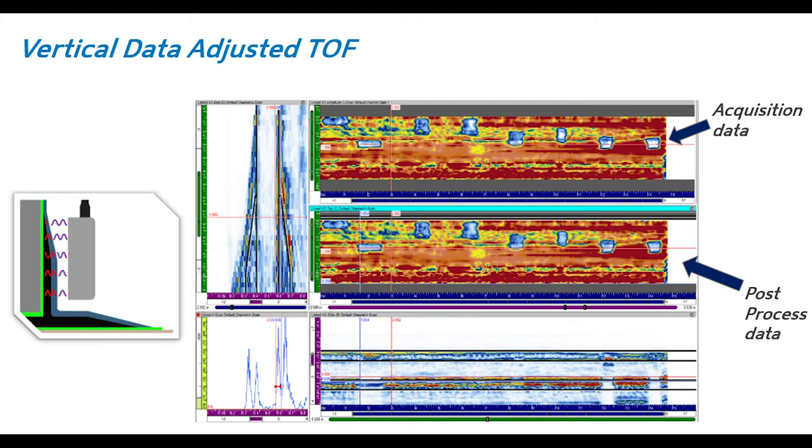Here's the vertical data adjusted time of flight data. You can see we have the overlay on the B-scan section to the left with an overlay of what the cross joint looks like. We are able to look at the front wall echo, the interface echo bond line, and actually are able to scan through and get information from the opposite side of the vertical as well. And as in the foot PI joint section, the as-acquired data and the post-processed data mirror each other as far as no post-processing required to find the defects off of the samples.